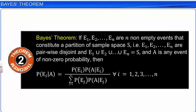Let's now state and prove Bayes' theorem. Bayes' theorem states that if E1, E2, and so on till En are n non-empty events that constitute a partition of sample space S — that is, the events are pairwise disjoint and their union equals S — and A is any event of non-zero probability, then the probability of Ei given A equals the probability of Ei times the probability of A given Ei, divided by the summation of the probability of Ej times the probability of A given Ej, for j running from 1 to n.